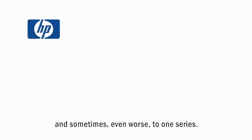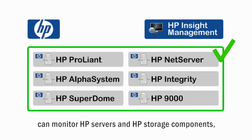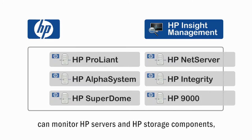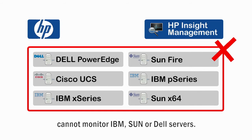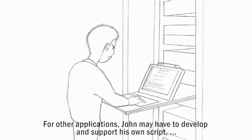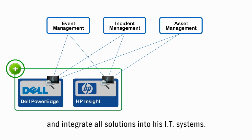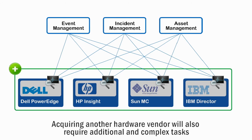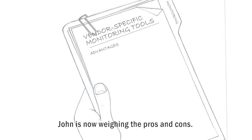In hardware monitoring, each solution is in fact specific to one vendor, and sometimes even worse, to one series. HP Insight Management, for example, can monitor HP servers and HP storage components, but cannot monitor IBM, Sun, or Dell servers. For other applications, John may have to develop and support his own scripts and integrate all solutions into his IT systems.